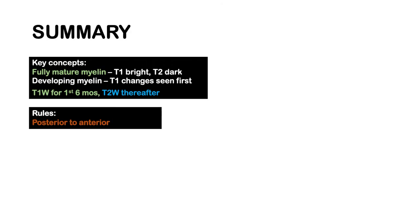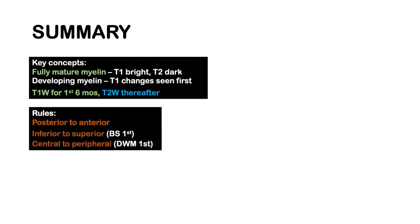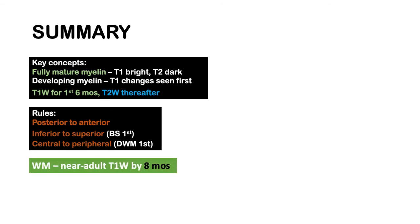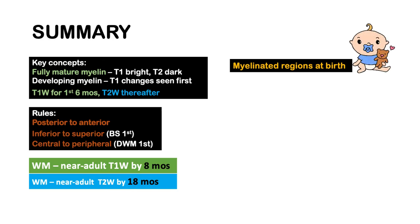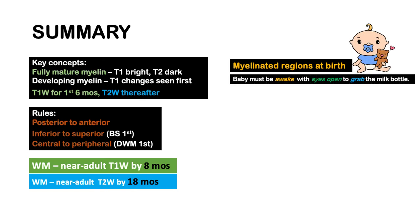The rules of myelination are that it goes from posterior to anterior, inferior to superior, and central to peripheral. We have the near-adult T1 appearance by eight months, and near-adult T2 appearance by 18 months. To recall the myelinated regions at birth, we associate the functions that a newborn must have.